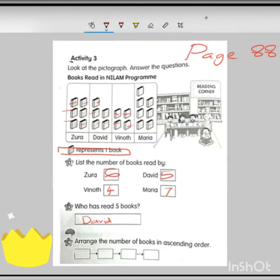Last question here, question C. Arrange the number of books in ascending order. Still remember the word ascending - ascending means from the small number to the bigger number. Which one is the smallest one? Yes, we start with number four. After number four, five books, six books, seven books. Then we complete page 88.